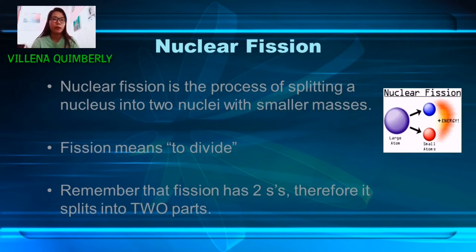The fission process often produces gamma photons and releases a very large amount of energy, even by the energetic standards of radioactive decay.